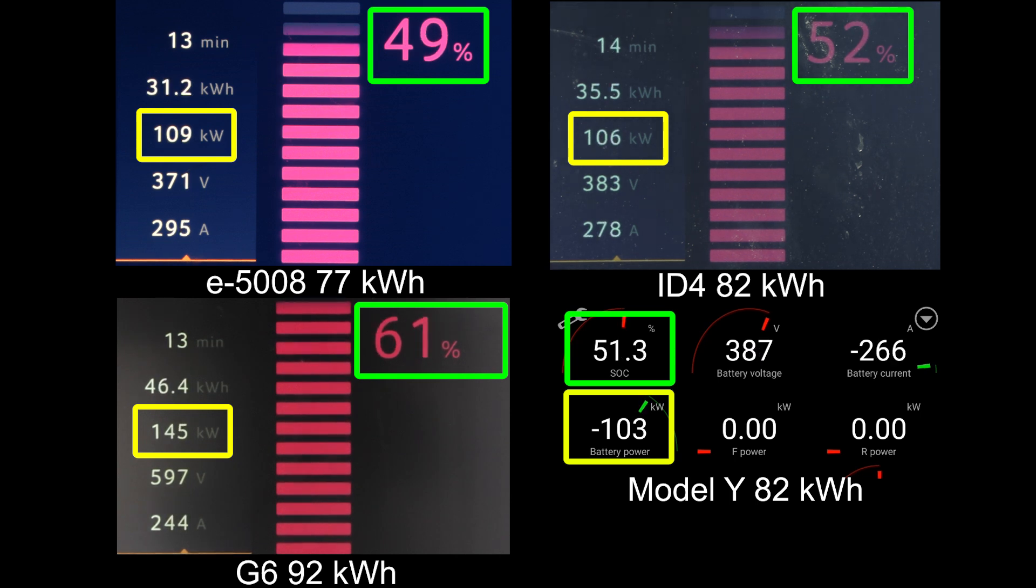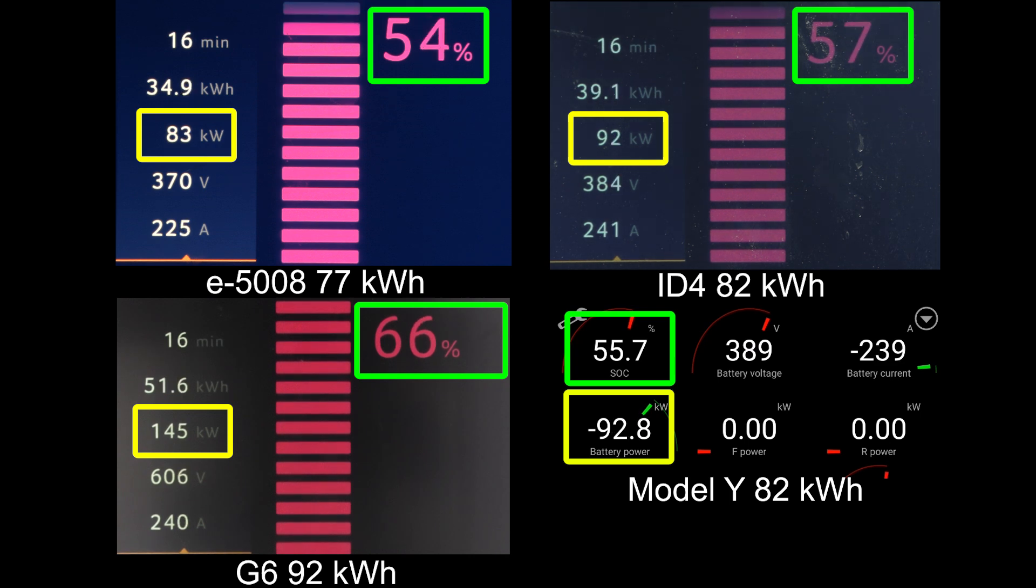Right now the G6 is still in a big lead. They're way ahead of the others, almost 10% faster than the others. Wow, that is very impressive. And then second place is actually ID4, and then Model Y is in the third place, and then the E5008 on the worst place. Now it started throttling even more at 50%, only 109 kilowatt.